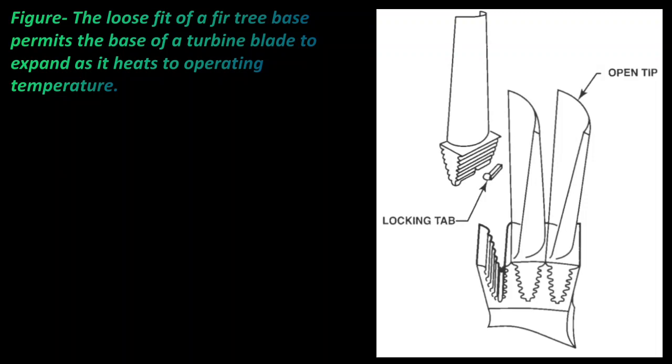Now in this picture you can see the loose fit of a fir-tree base permits the base of the turbine blade to expand as it heats to operating temperature. And you can see here this is an open tip turbine blade, and this is a fir-tree method of attachment of the turbine blade to the turbine disc. And after it is attached, then it is fixed by the locking tab.